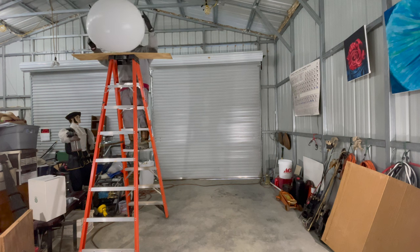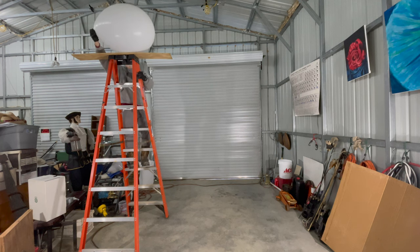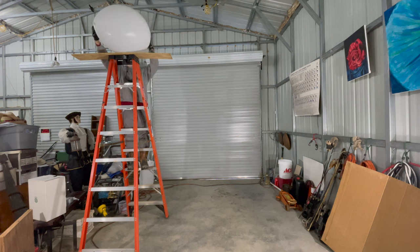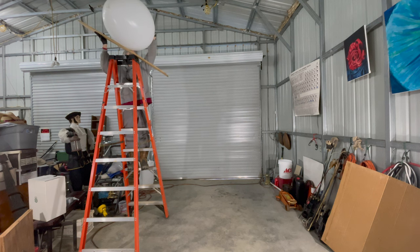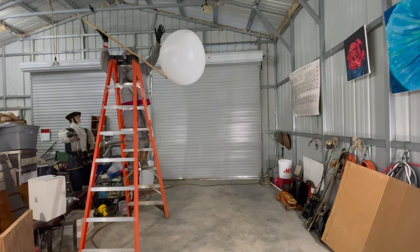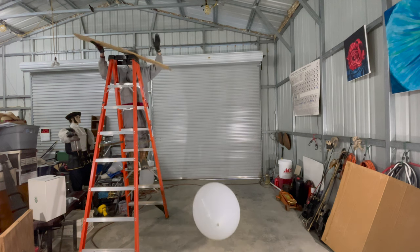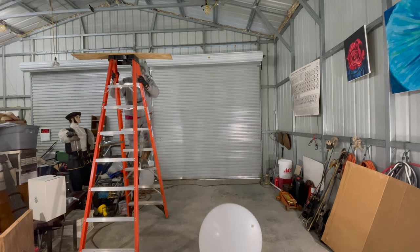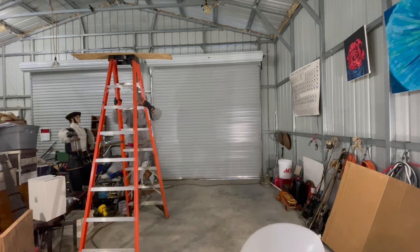We're going to be showing you several different ways to demonstrate the Magnus effect. One of them is a very large air-filled balloon. We're going to roll all these objects off of a ramp. That causes them to spin clockwise relative to the view you're looking at it and tend to make it curve back in towards the base of the ladder. So we'll take a look at each of these, see how they do.